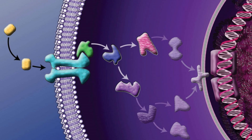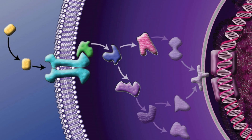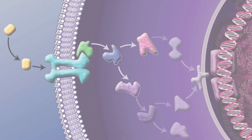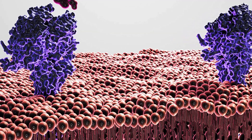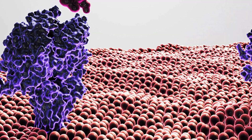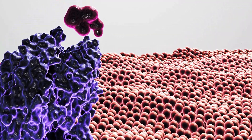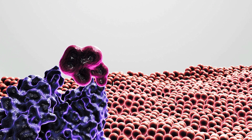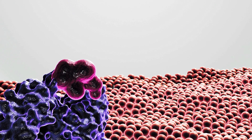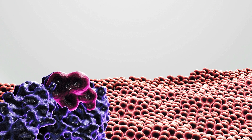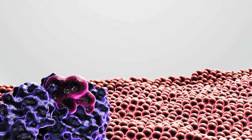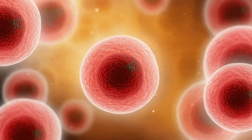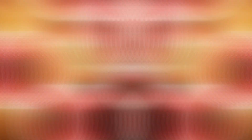Moreover, the cell membrane plays a vital role in cell signaling. It is studded with receptors that enable cells to receive and respond to chemical signals from their environment. These signals can initiate a cascade of events within the cell, leading to changes in gene expression, metabolism, or cell behavior.